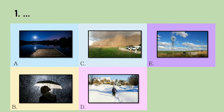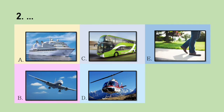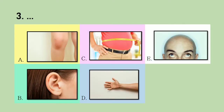Number 1: How was the weather when Dr. Foster went to Gloucester? Number 2: How did Dr. Foster get to Gloucester? Number 3: Which part of Dr. Foster's body showed the depth of the puddle of water?